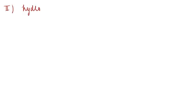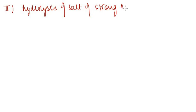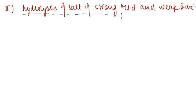After finding the pH of salt of strong acid and strong base, which is actually 7, we are going to talk about the second case of hydrolysis of salt — hydrolysis of salt of strong acid and weak base. Whenever we have a salt made up of a strong acid and a weak base, we will discuss this case.